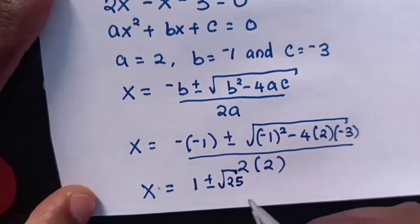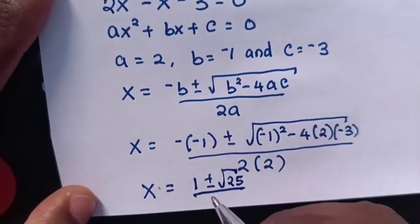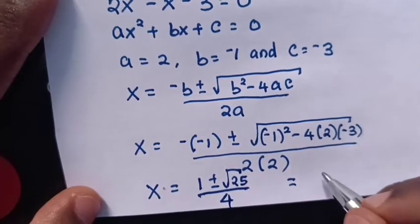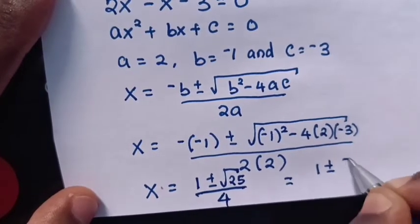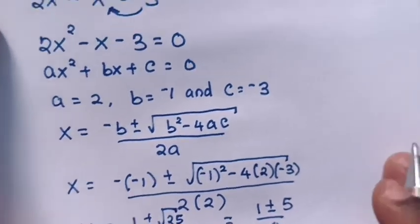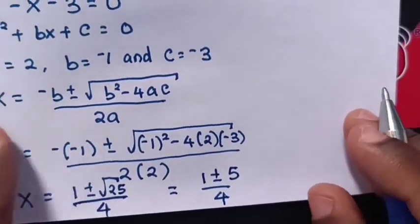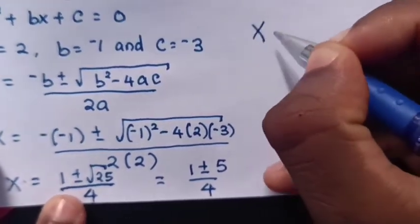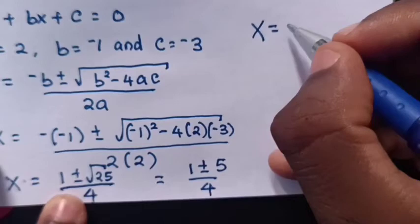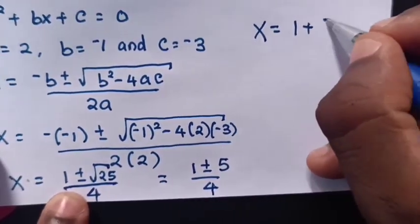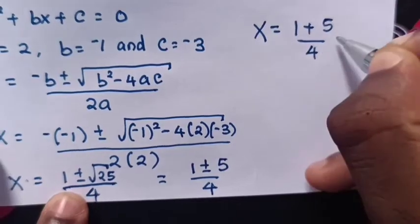which is 25, over 2 times 2 is 4. So x equals 1 plus or minus 5 over 4.